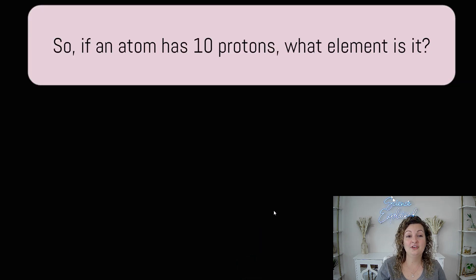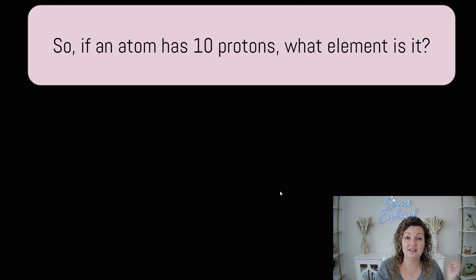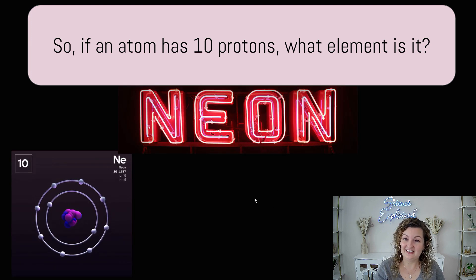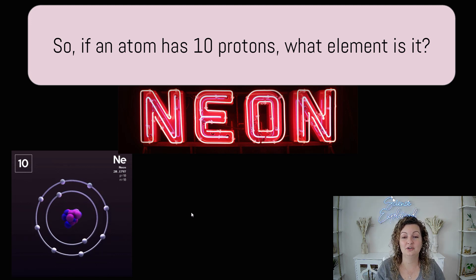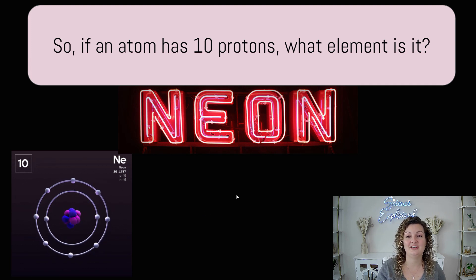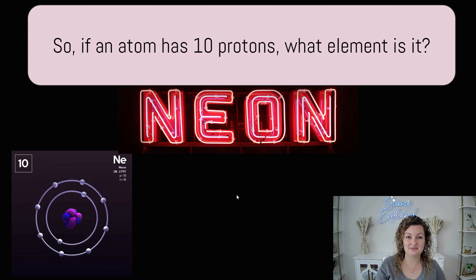So if an atom has 10 protons, what element is it? Look at your periodic table, look for the atomic number 10, and tell me which element it is. Go ahead and pause your video. Okay, it is neon. Neon is number 10, and this is what neon looks like — we have 10 protons, 10 neutrons, and 10 electrons in order to keep it a neutral element. And yes, neon is what we use in those neon signs to run electricity through to produce light.